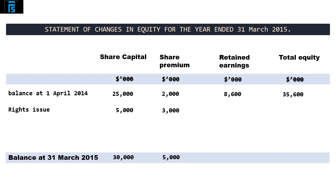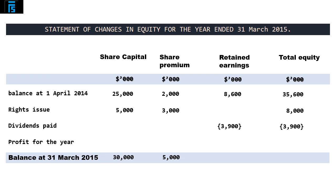The subsequent three rows of the statement will present the changes caused by the rights issue itself, the payment of dividends to shareholders, as well as the addition of the profit for the year to retained earnings. As we have already established, the rights issue involved shareholders taking up 5 million new ordinary shares, causing a $5,000 increase to share capital and a further $3,000 to share premium, with a total $8,000 upward impact on equity. The next line is dividends paid — a $3,900 debit balance taken directly from the trial balance, which we must deduct from the retained earnings column.